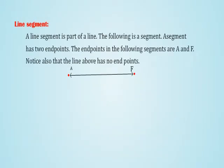Line Segment: A line segment is a part of a line. The following is a segment. A segment has two endpoints. The endpoints in the following segments are A and F. Notice also that the line above has no endpoints.